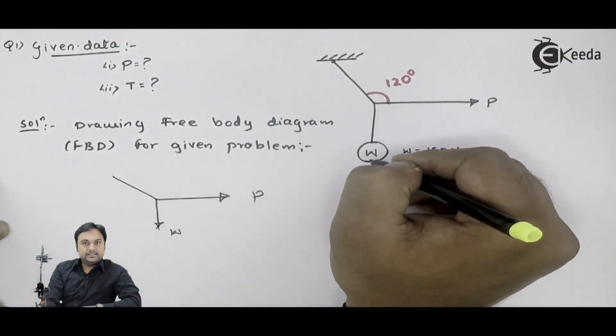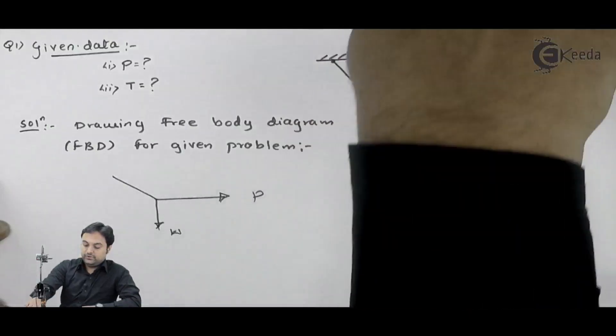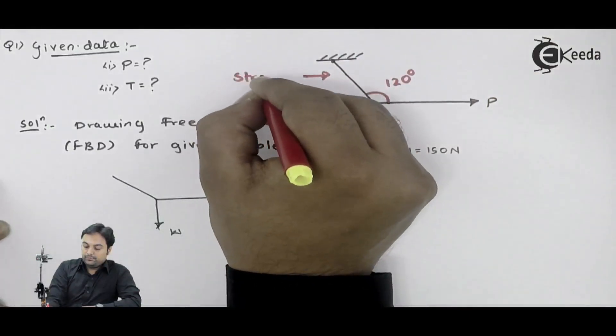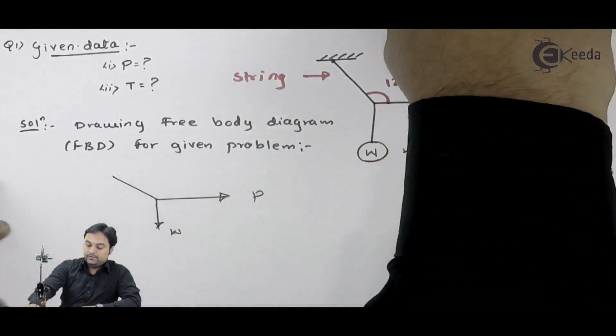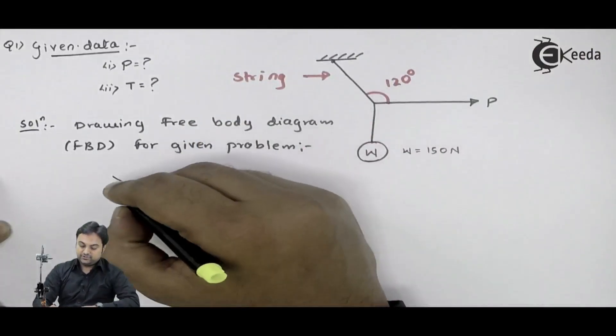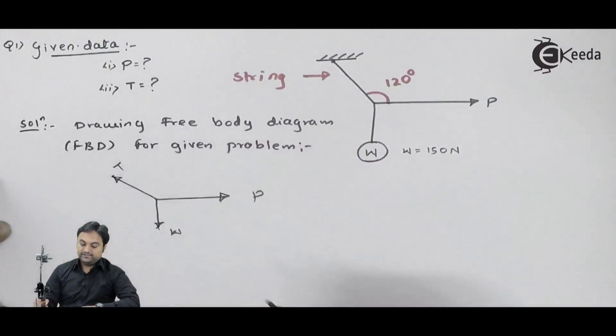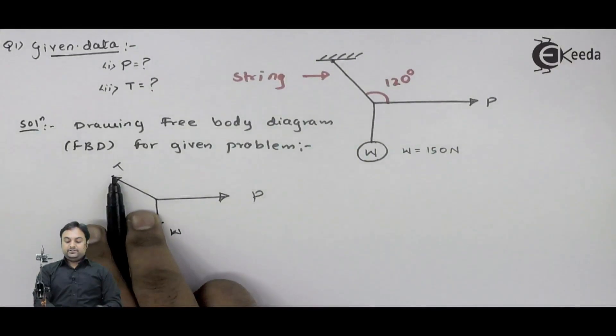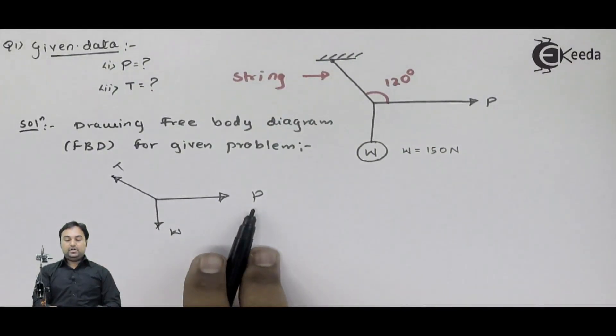Since you are pulling this string or rope, the rope is being pulled, so because of that there will be tension in this rope denoted by letter T. Here we have to calculate the value of tension in the string and effort P.